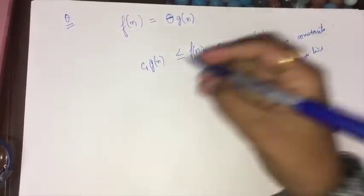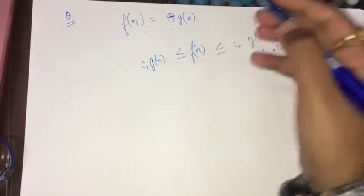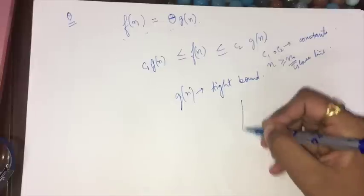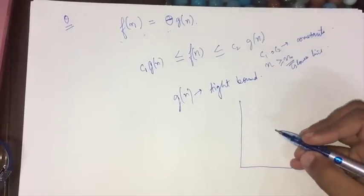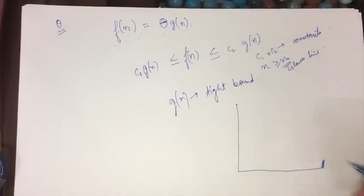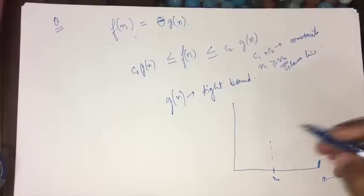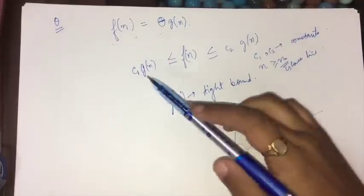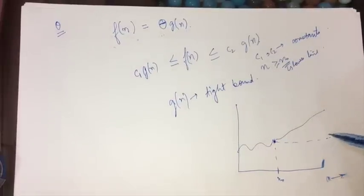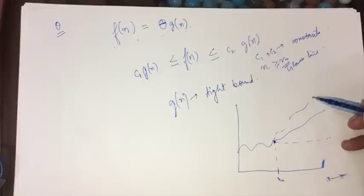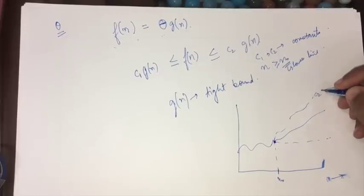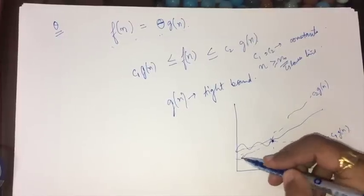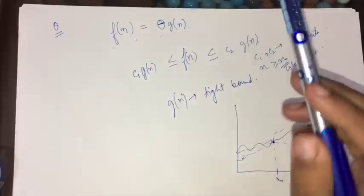If f(n) is Theta of g(n), then g(n) is known as the tight bound on f(n). On the graph, after value n₀, the function c₁·g(n) is smaller than f(n) and c₂·g(n) is greater than f(n), so f(n) is sandwiched between them.